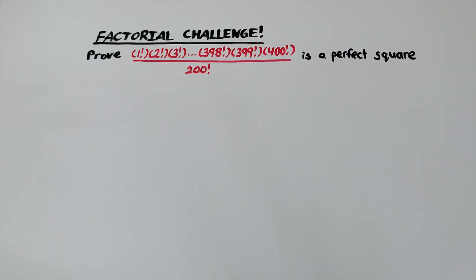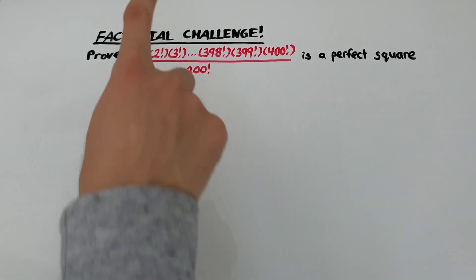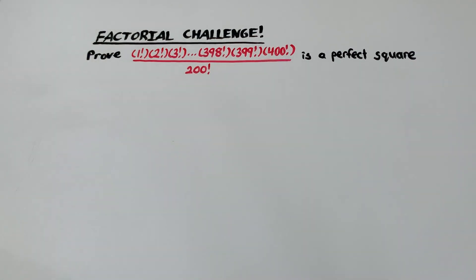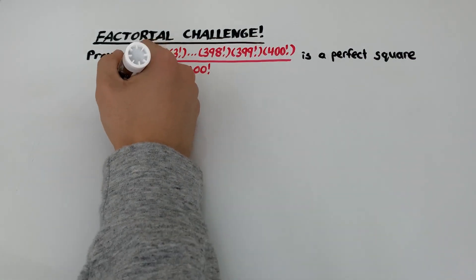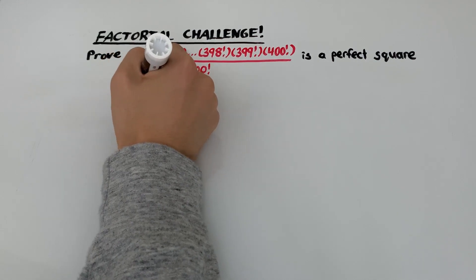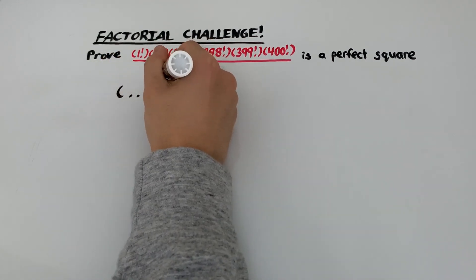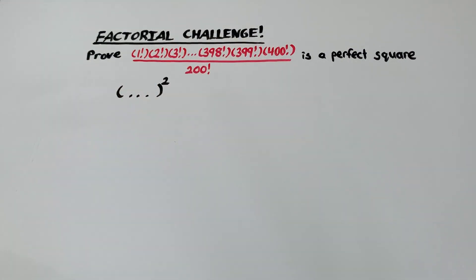It's time for a factorial challenge problem. Using our knowledge of factorials and other problem-solving strategies, we need to somehow prove that this monstrosity is a perfect square. So if we can somehow turn this number into something like this, then we know that it's a perfect square. So let's try to do that.